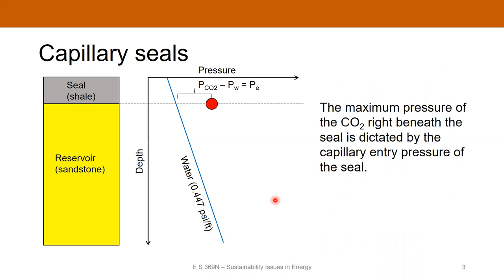The limiting factor here is going to be that the maximum pressure of the carbon dioxide below the seal is going to be dictated by the capillary entry pressure of the seal. This reservoir is a sandstone, it's water wet, and carbon dioxide is the non-wetting phase. Because it's the non-wetting phase, it's always going to be present at a pressure higher than the wetting phase, which is water. If we don't want the CO2 to leak into the seal above the reservoir, we need to make sure the capillary pressure stays below the entry pressure. That entry pressure has to be larger than or equal to the difference between the CO2 and the water phase pressure.